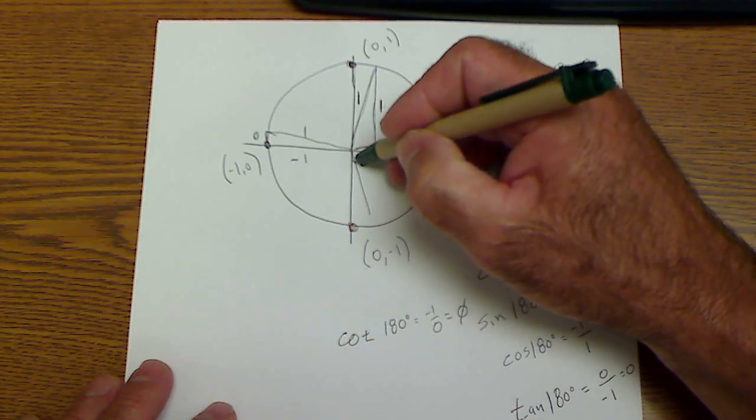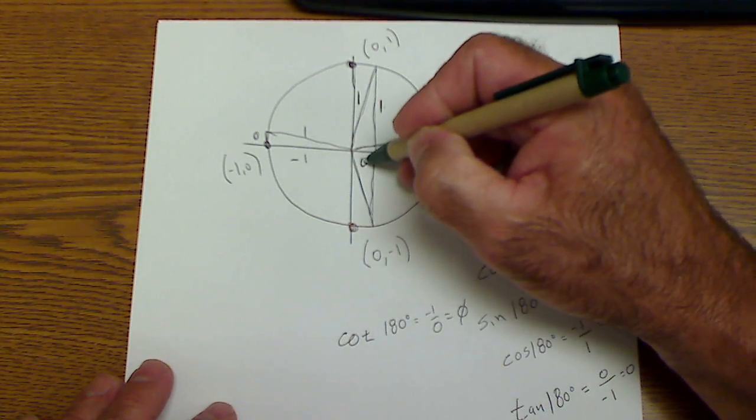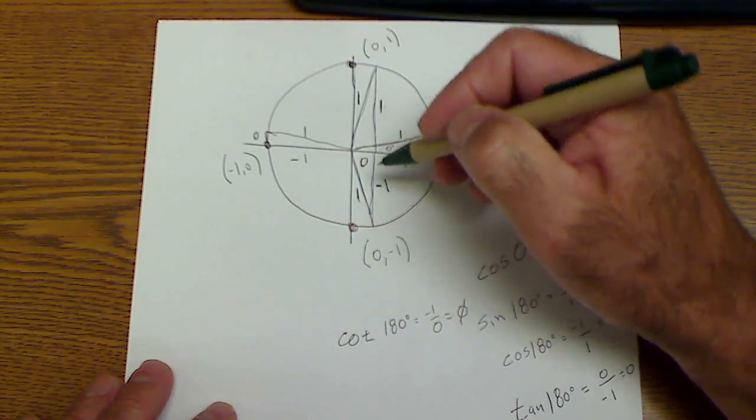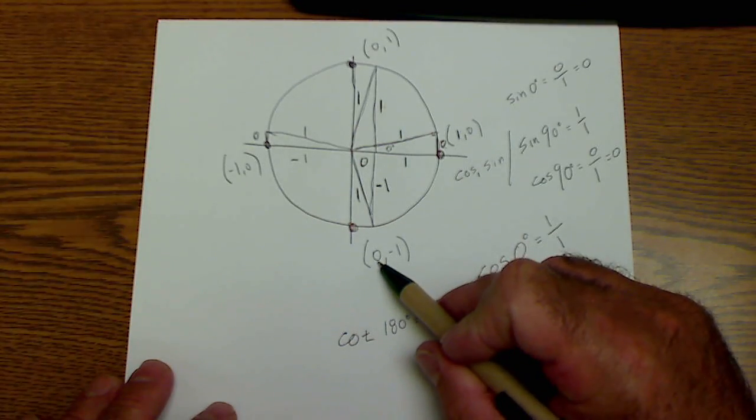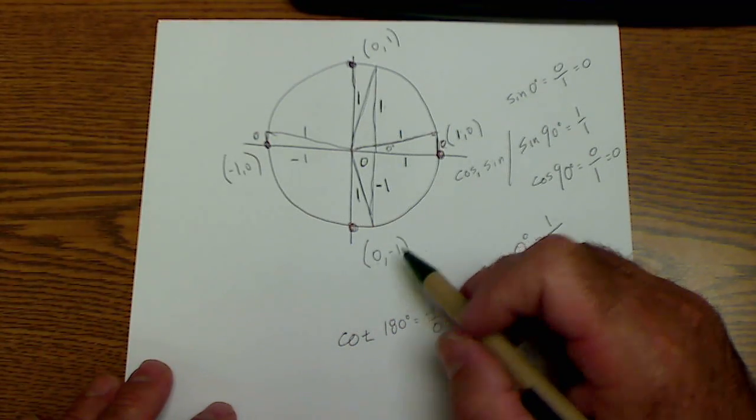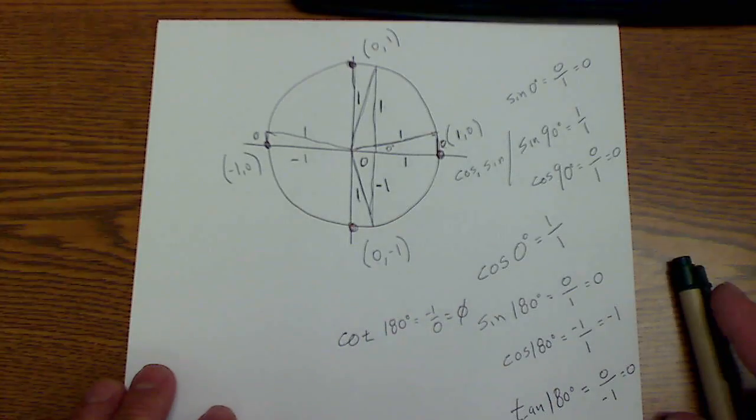Down here at 270, your adjacent is still 0, your hypotenuse is 1, but now your opposite is a negative 1. Right, this again is your cosine value or your adjacent value, this is your opposite value or your sine value, hypotenuse is always 1.